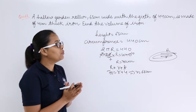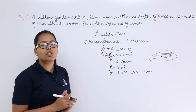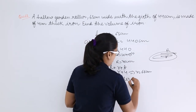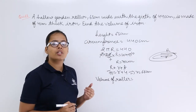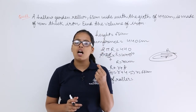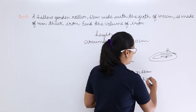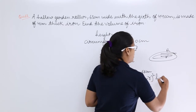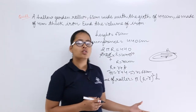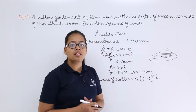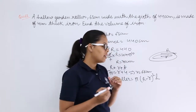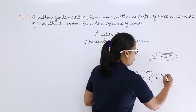Now you need to calculate the volume of the iron metal sheet with which this roller has been made. The roller is a hollow cylinder. You might think to use the formula π times (R minus r) squared times h, but that is not correct — you cannot write it that way. Instead, you will calculate the volume of the external cylinder and subtract the volume of the hollow inner part.